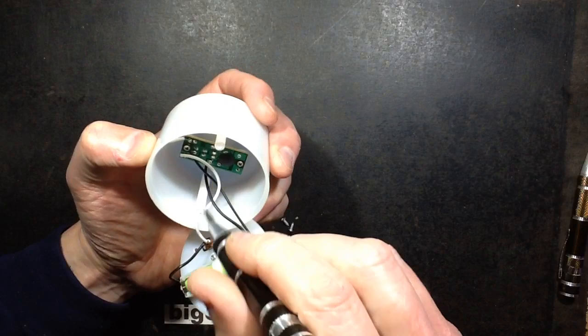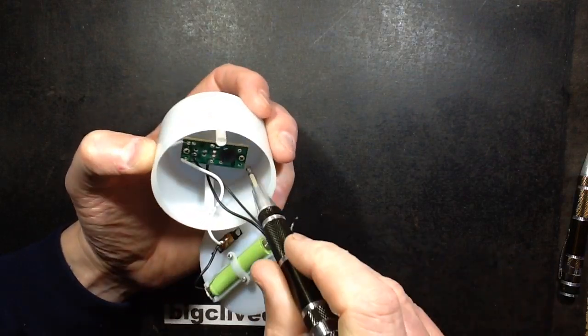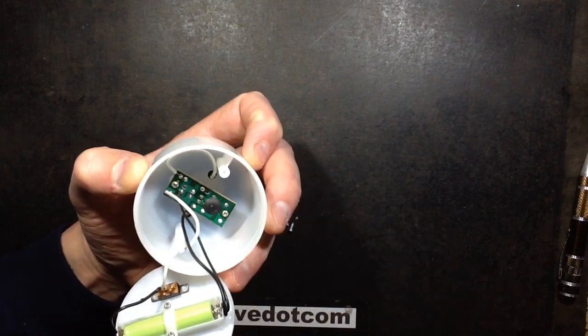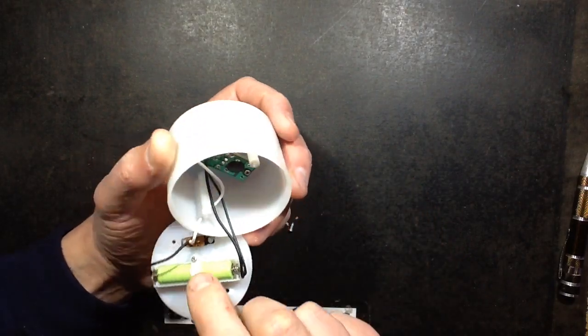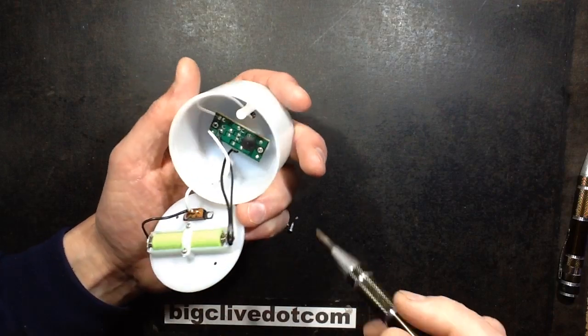Oh, it's a blob in there. It's one of the chip on board, just potted in resin. The cell is a triple-A and it's actually clamped in quite tightly. That's quite good.